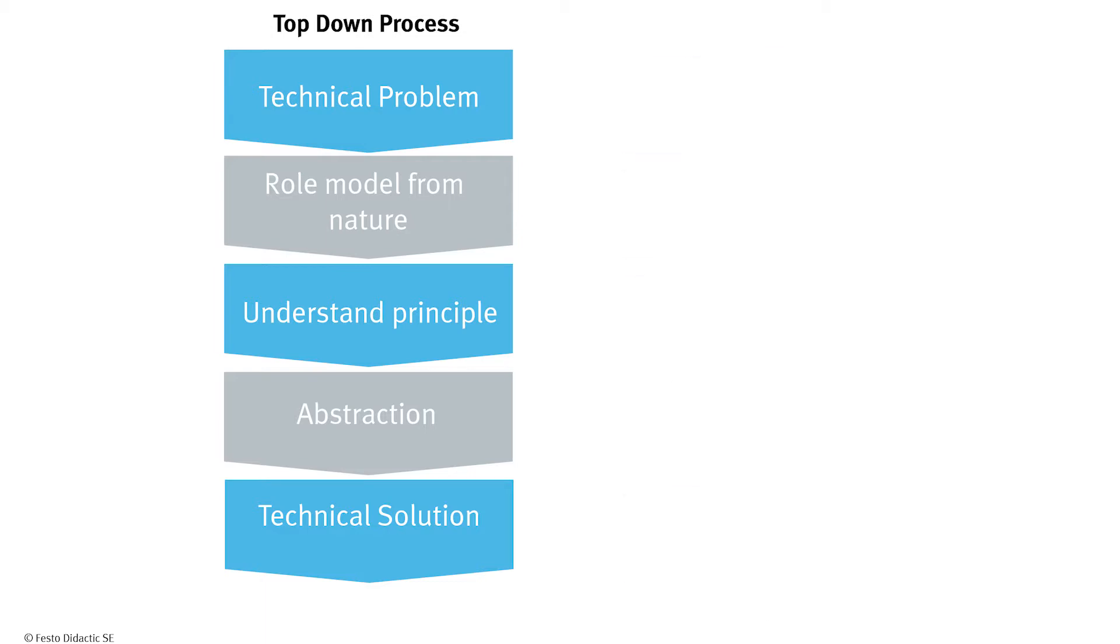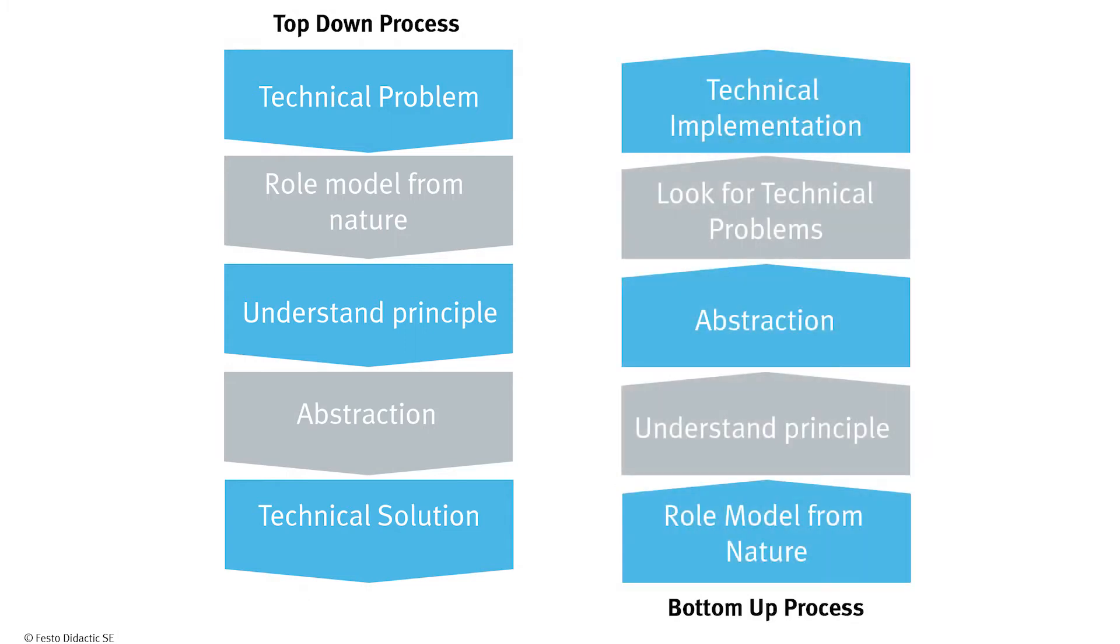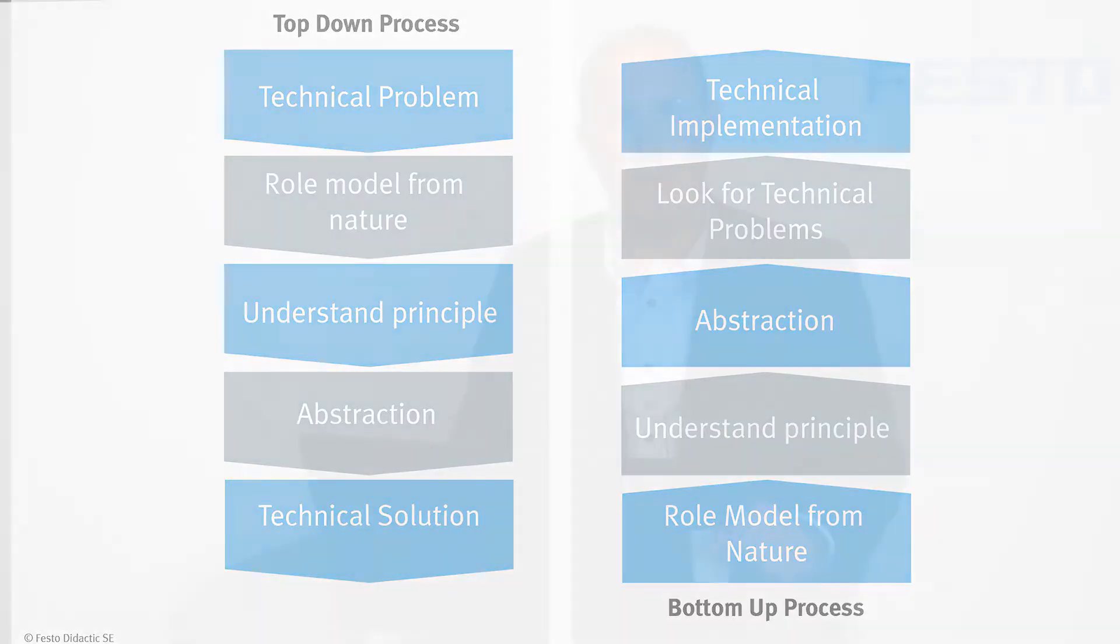On the other hand, this is what George de Mistral did, you find role models in nature. You see an effect and then you make an abstraction of it based on the principle. Then you look for technical problems you can solve with this. This is called the bottom-up process. Now we want to discuss a not so well known example for the bottom-up process: the fin ray.